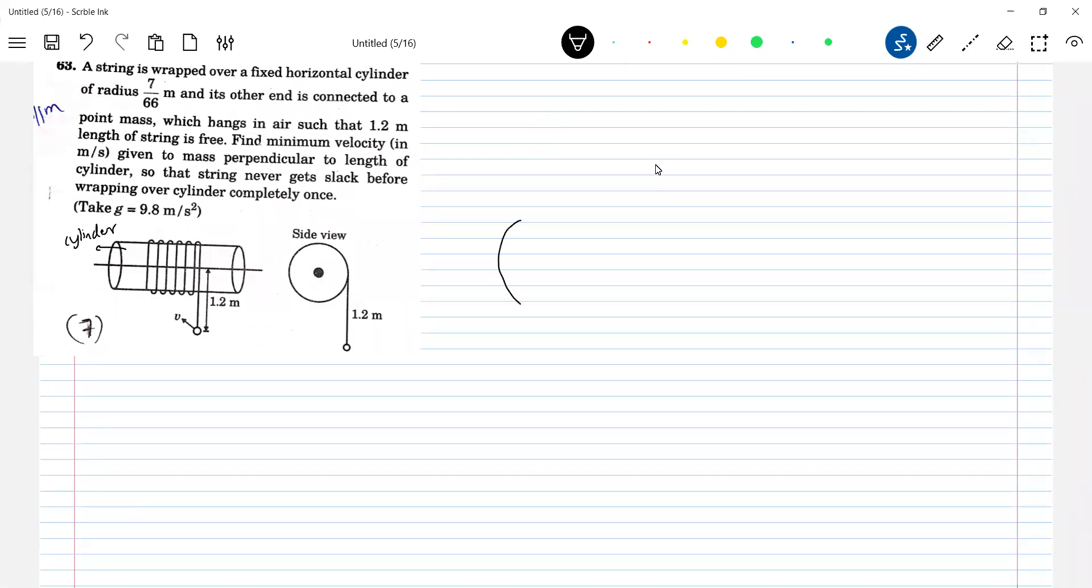So this is the, you can take like this. So here, this is string. So what is the length of the string? So it is given 1.2 meter. So this length equal to 1.2 meter. This is the point P1. Now what velocity should impart so that it will wrap.